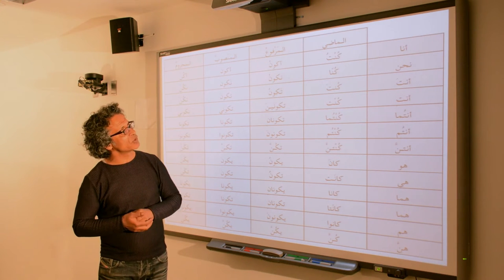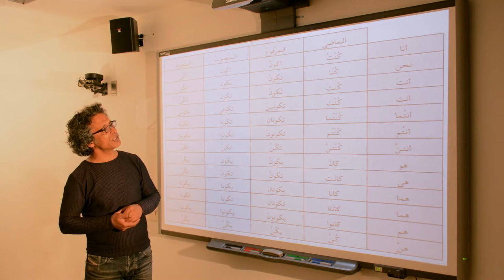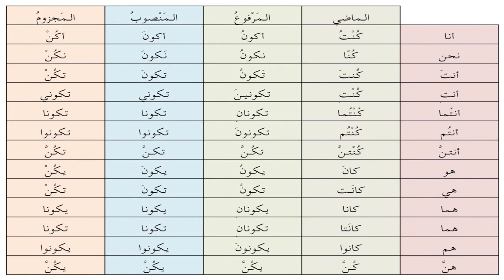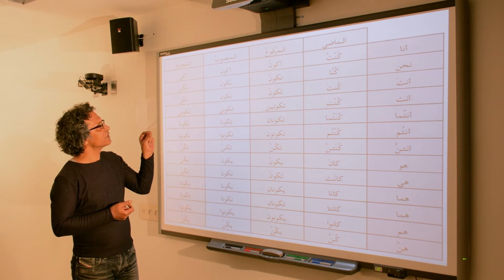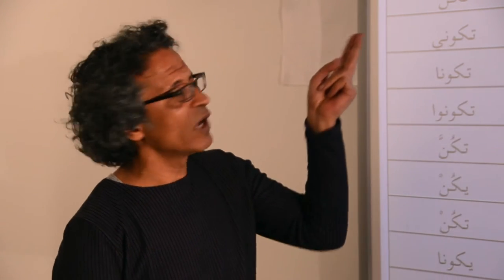This is a table that should help you to see how Kana is conjugated with all the pronouns — in the past (الماضي), المضارع المرفوع, and المضارع المنصوب والمضارع المجزوم. You will notice that in certain places it loses its waw or it loses its alif, and that has to do with the fact that you cannot have a long vowel followed by a sukun. This is something we'll talk about in more detail when we tackle these irregular verbs.